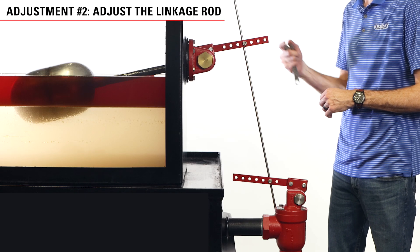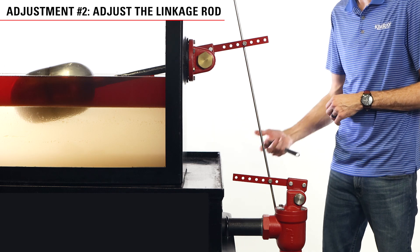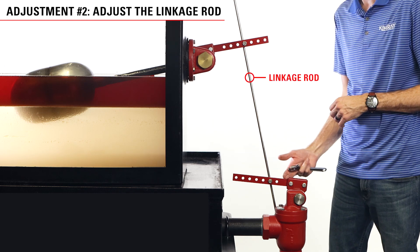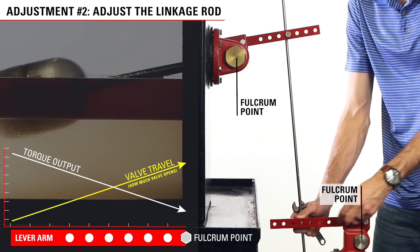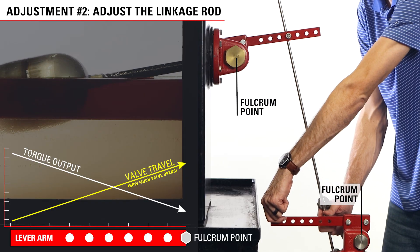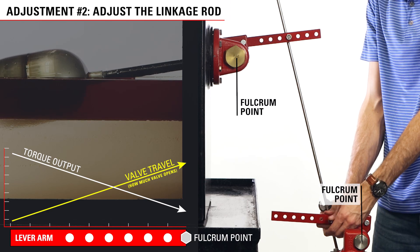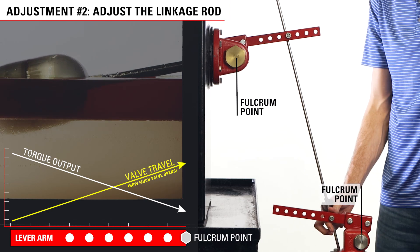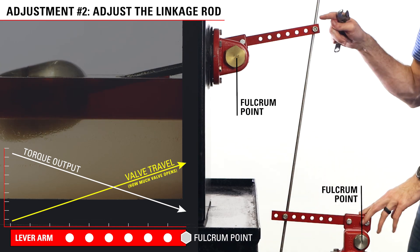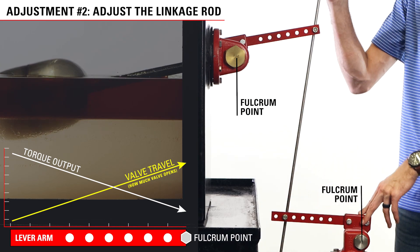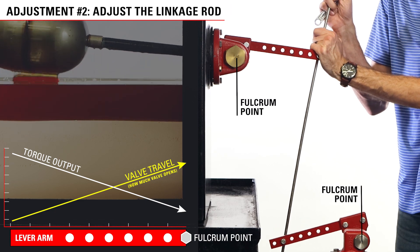The torque and travel for both the trunnion and dump valve lever arms are adjustable by changing the position of the linkage rod on the lever arms. As you move the linkage rod towards the fulcrum point, you will increase the valve travel or how much the valve opens, but it will decrease the torque. When you move the linkage rod connection away from the fulcrum point, you increase the torque output, but decrease the valve travel.